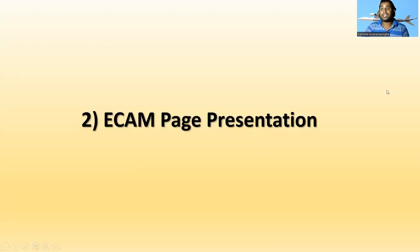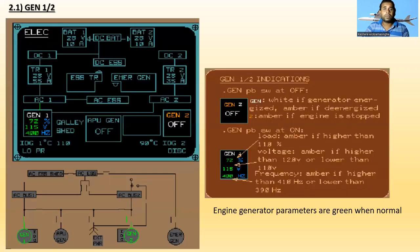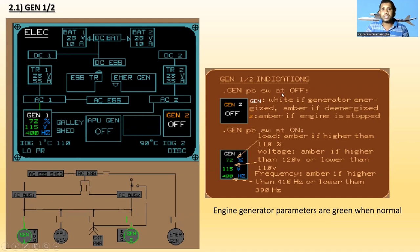Now we'll go to the ECAM page presentations for the electrical system, ATA Chapter 24. The first is Generator 1 or 2. Engine generator parameters are green when normal — for example, Generator 1 at 72% load, 115 volts, 400 hertz in normal configuration. Generator indications: with the generator push button switch at OFF, GEN shows white if the generator is energized, amber if de-energized, and amber if the engine is stopped.